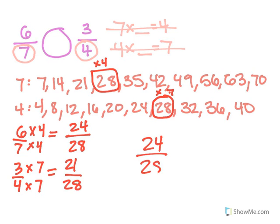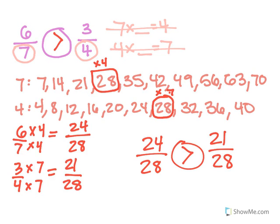So now I can compare: 24 twenty-eighths compared with 21 twenty-eighths. And I can see 24 twenty-eighths was bigger, so in the end 6 sevenths was bigger than 3 fourths. If you noticed, I actually did strategy 2 and strategy 3 combined — I listed out my multiples and the smallest multiple where they're both common is 28, which is times 4 for one and times 7 for the other. Sometimes that happens and that's okay.